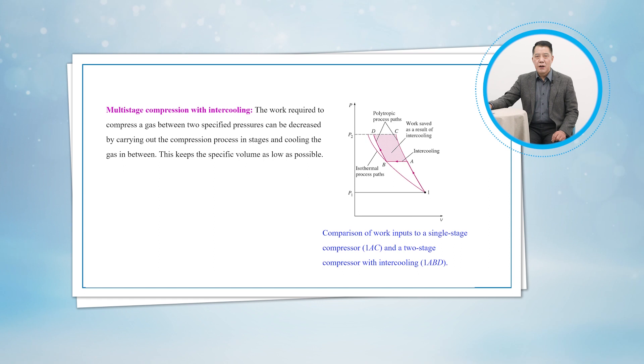Likewise, the work output of a turbine operating between two pressure levels can be increased by expanding the gas in stages and reheating it in between—that is, utilizing multistage expansion with reheating. This is accomplished without raising the maximum temperature in the cycle.